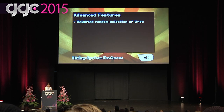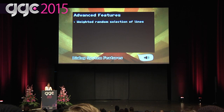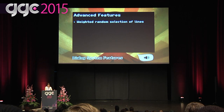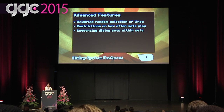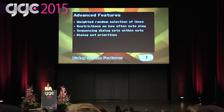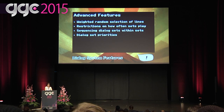For more advanced features: weighted random selection of lines, useful for reactions to common game events like getting hit — you'd have a higher probability on a normal sound than on a more elaborate line. You'll also want the ability to specify how long to wait after a particular dialogue set has played before it plays again. Ability to sequence a set of other dialogue sets in addition to dialogue lines. Choosing which dialogue sets to play based on priority — for instance, if you're in the middle of an important dramatic exchange, you don't want to hear the character commenting on a nearby collectible.